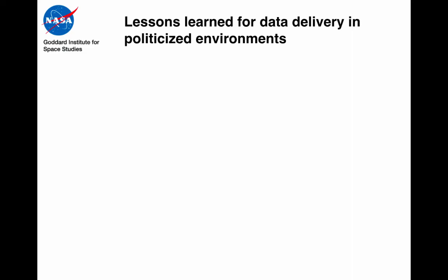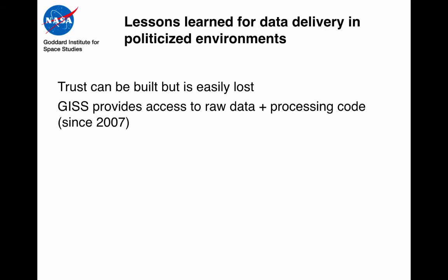This is a conference on climate change statistics for many different purposes, and perhaps I might share a couple of lessons learnt from years of providing climate change data from NASA. Climate change data is politicised, particularly in the United States and around some other parts of the world. The first thing is that you can build trust in your products, but it can be easily lost via missteps or a lack of transparency. We have provided access to the raw data and the processing code since 2007, and that has been enormously helpful at diffusing some of the misplaced attention to the processing that has occurred.